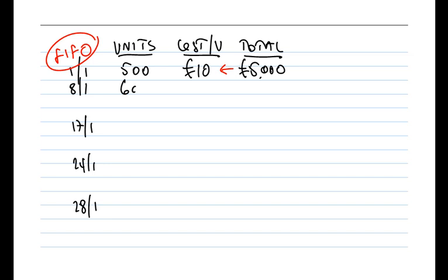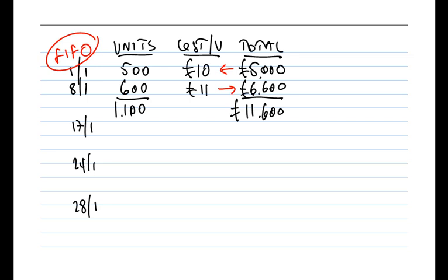On the 8th of January, we purchased another 600 units at £11 per unit. If you multiply 600 units by £11, that's a total of £6,600. Pausing at that point to work out the inventory position: we had 500 units and just purchased another 600, so we now have 1,100 units with a total value. Adding the £5,000 for opening inventory plus £6,600 gives a total of £11,600 at the end of the day on the 8th of January.